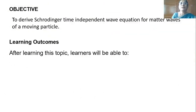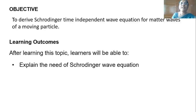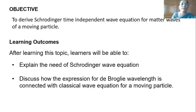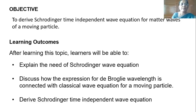After learning this topic, learners will be able to understand and explain the need of Schrödinger wave equation. They will discuss how the expression for de Broglie wavelength is connected with the classical wave equation for a moving particle, and they will be able to derive the Schrödinger time independent wave equation.